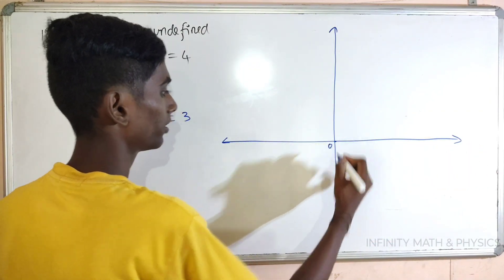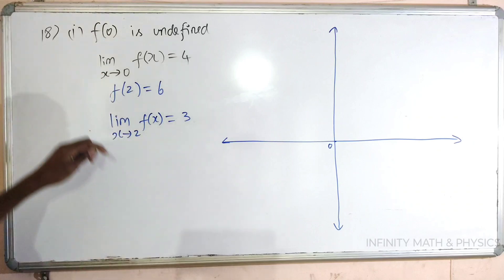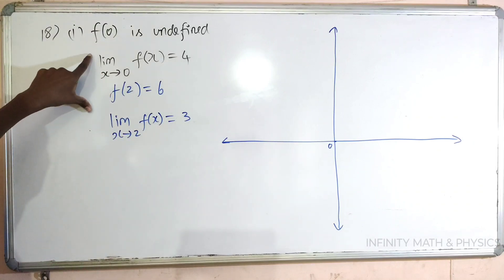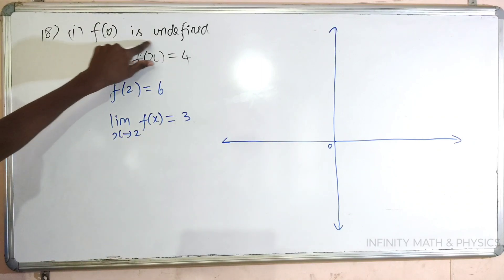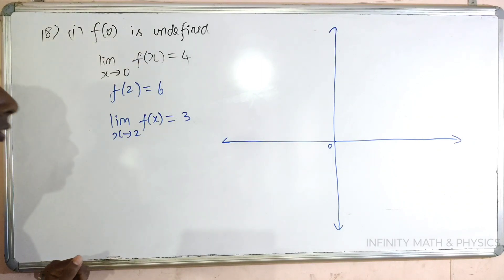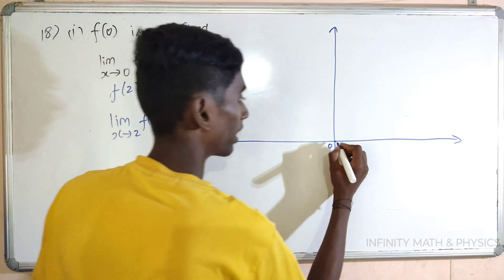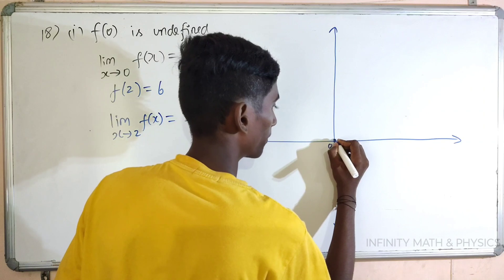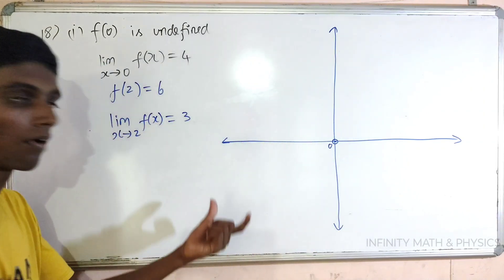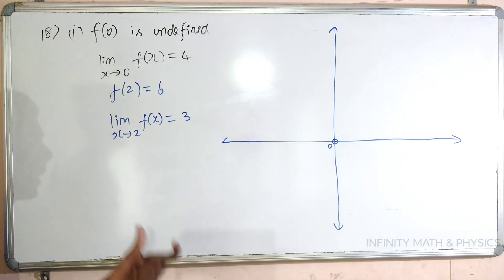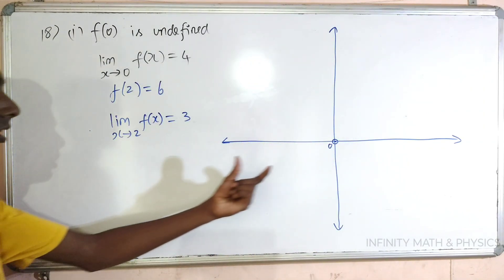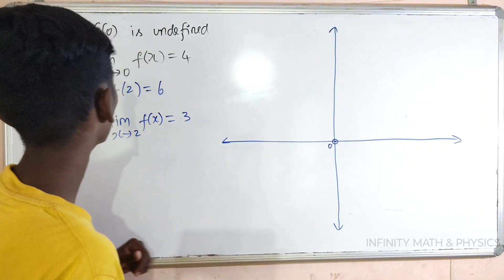This is our origin. What do you think about the given values? f of 0 is undefined. We are going to put a round circle because the function is undefined at 0.